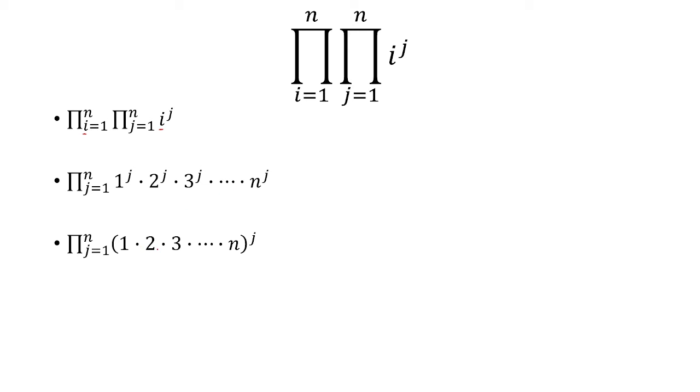In the parentheses, I have 1 times 2 times 3 all the way up to n, which can be rewritten as n factorial. And then that's going to be raised to the j power.